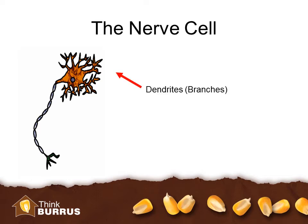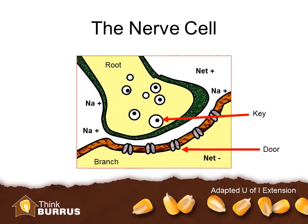Some insecticides will mess up the signal as it comes into the cell through the branches of the nerve cell, what we call the dendrites. The ability of a nerve cell to fire is based on the charge inside the cell changing from a net negative to a net positive charge — the inside is more negative and the outside is more positive. A chemical signal is released from one neuron and is inserted into the door of the next neuron. When those doors open, positively charged material rushes in and changes the charge — that is when the nerve cell is activated. If you remember back to our last session on OP and carbamate insecticides, they mess up this part of the process.